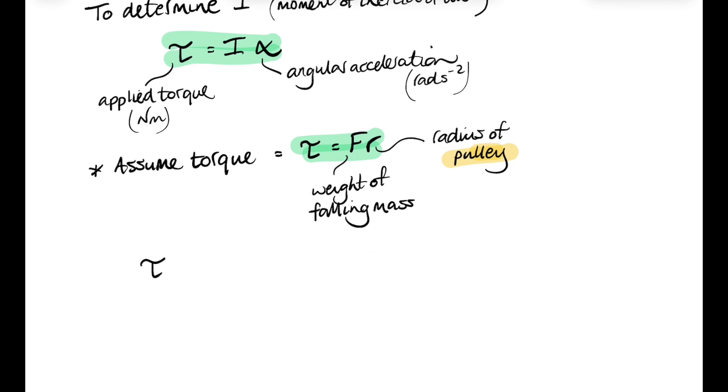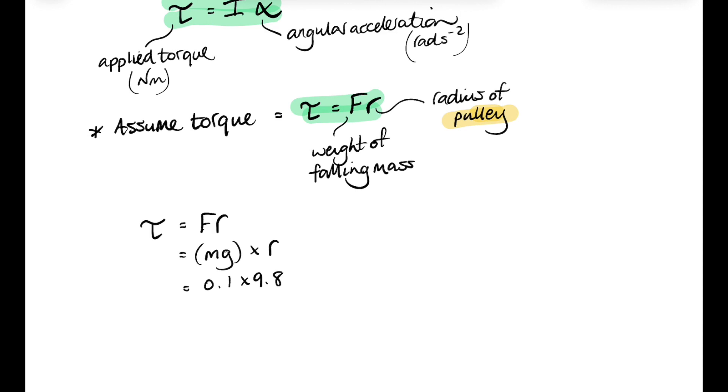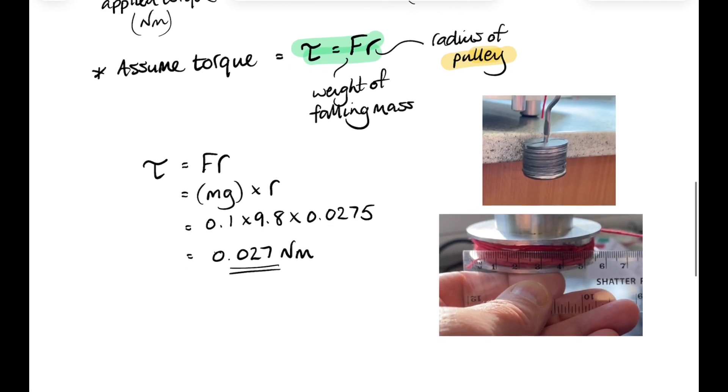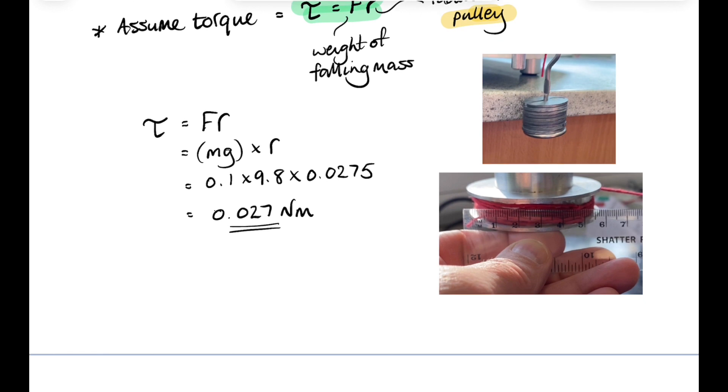So let's sub our values in then for the weight and the radius. So it will be mg times r. The mass was 0.1 kilograms and the radius 0.0275. And that gives us an answer for the applied torque of 0.027 newton meters. Remember, we used a hanging mass of 100 grams and the pulley had a diameter of 5.5 centimeters. So it's radius 2.75 centimeters.